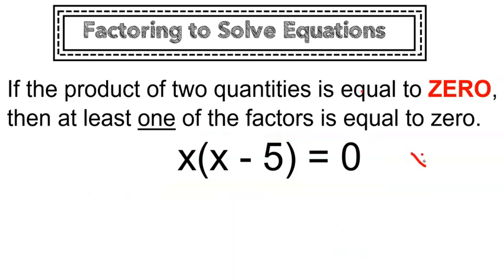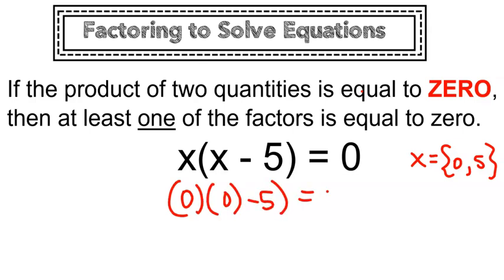So if I think that x could be equal to 0 or 5, that means if I plug a 0 in for this x and a 0 in for that x, that I would get 0 times negative 5. And that is in fact equal to 0.